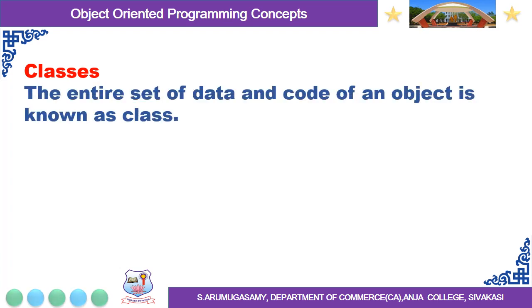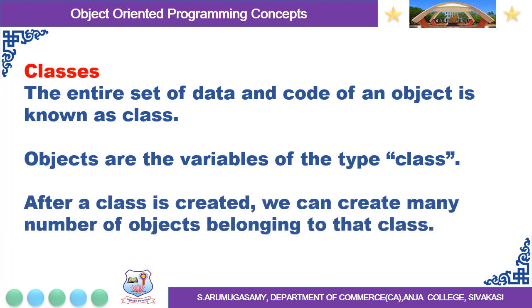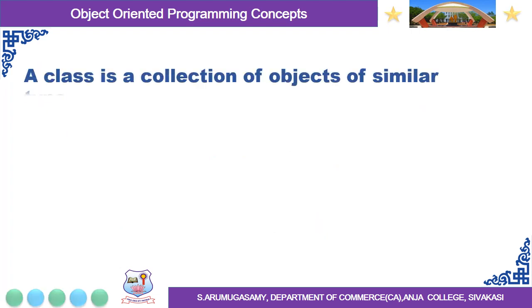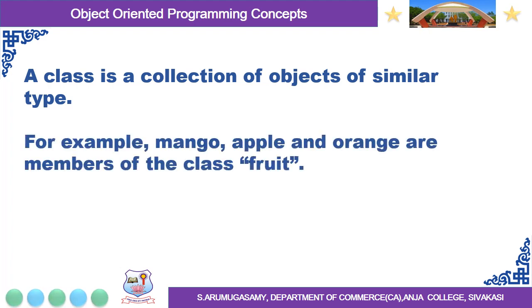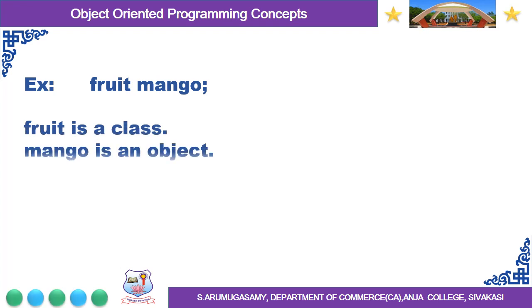The next concept is Classes. The entire set of data and code of an object is known as a class. Objects are the variables of the type class. After a class is created, we can create many number of objects belonging to that class. A class is a collection of objects of similar type. For example, mango, apple, and orange are the members of the class fruit. Classes are user-defined data types. For example, fruit is a class and mango is an object.